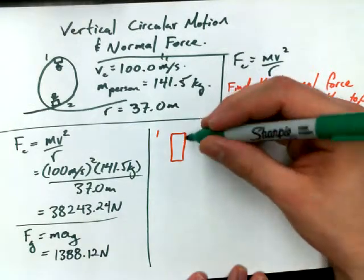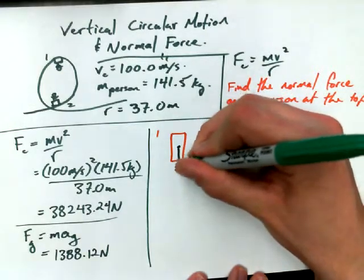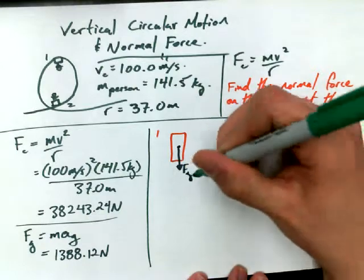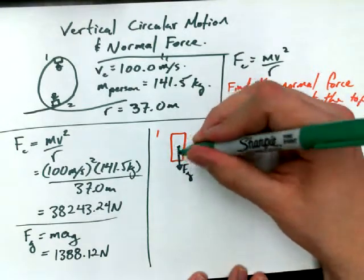What are the downward forces on this thing? Naz? Fg. Yeah. F normal is actually down this time. I thought I might trip you up, Naz. You're a pro.